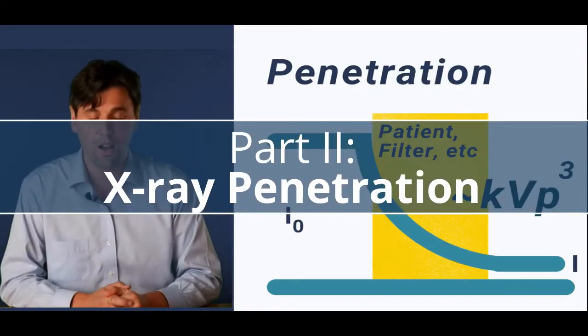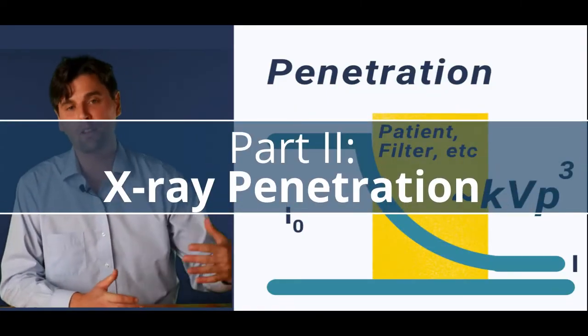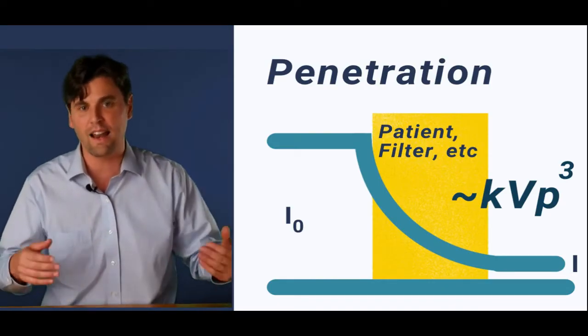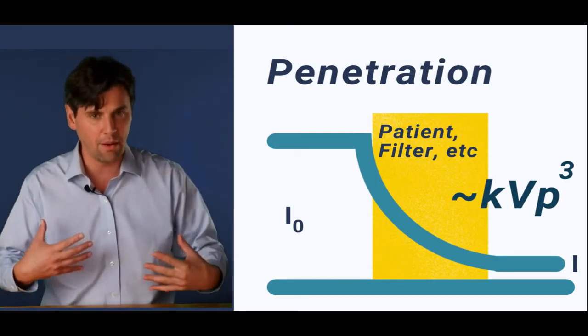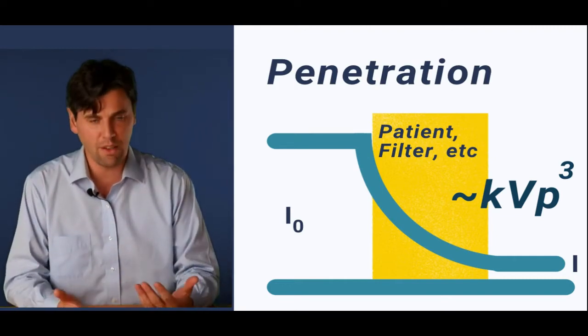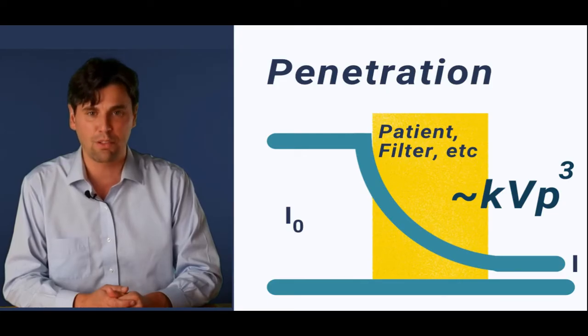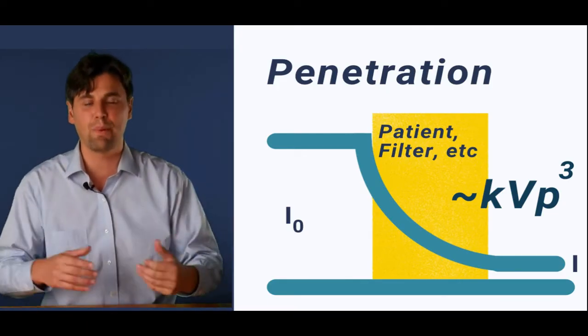As we've talked about before, the higher the KVP, the more likely the x-rays are going to actually make it through the patient. So obviously this depends a lot on the KVP and the body anatomy. But roughly you can think of the likelihood of the x-rays making it through the patient goes like KVP to the third.